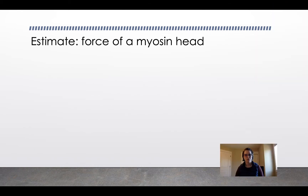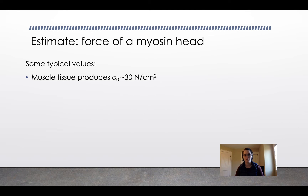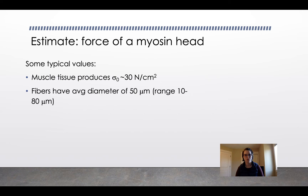The primary purpose of muscle is to generate force. On a molecular level, what is the force of a myosin head? Here are some typical values to help estimate that. Muscle tissue produces about 30 newtons per square centimeter, no matter where it is in the body and no matter what kind of tissue — it's about what it's capable of producing.